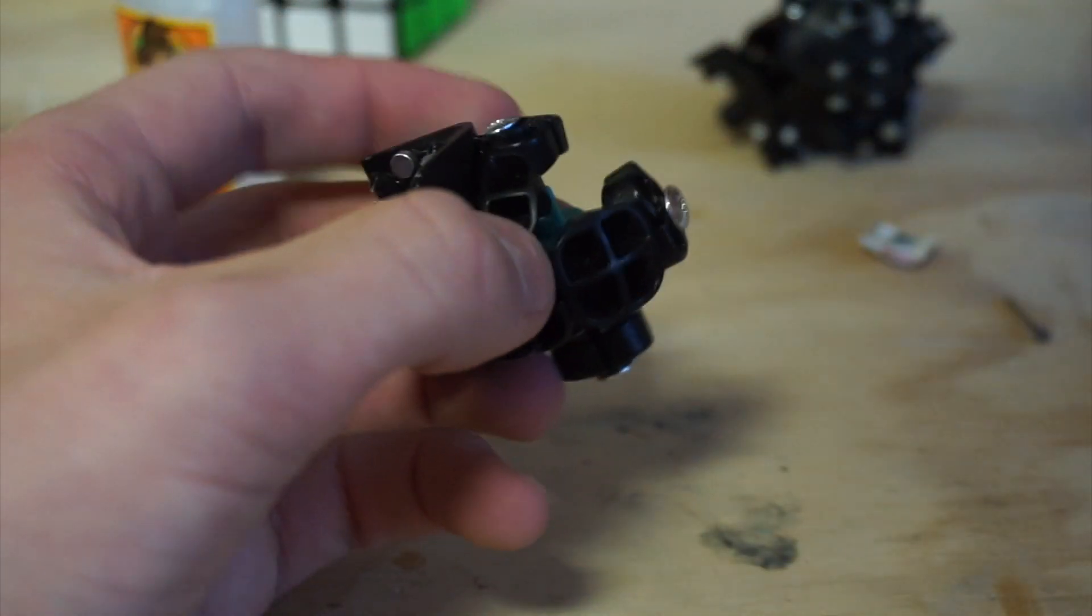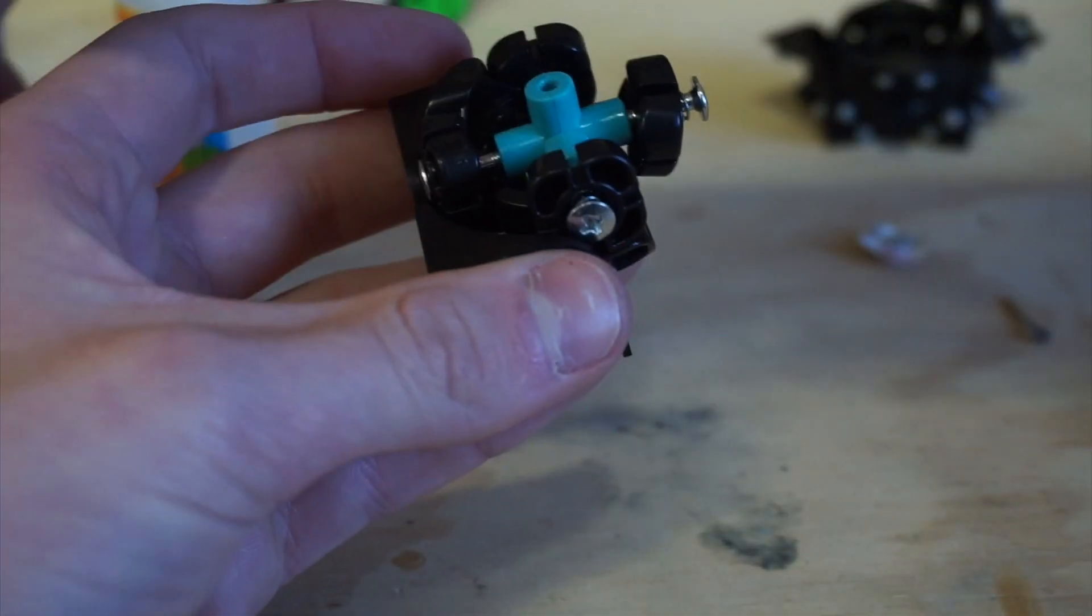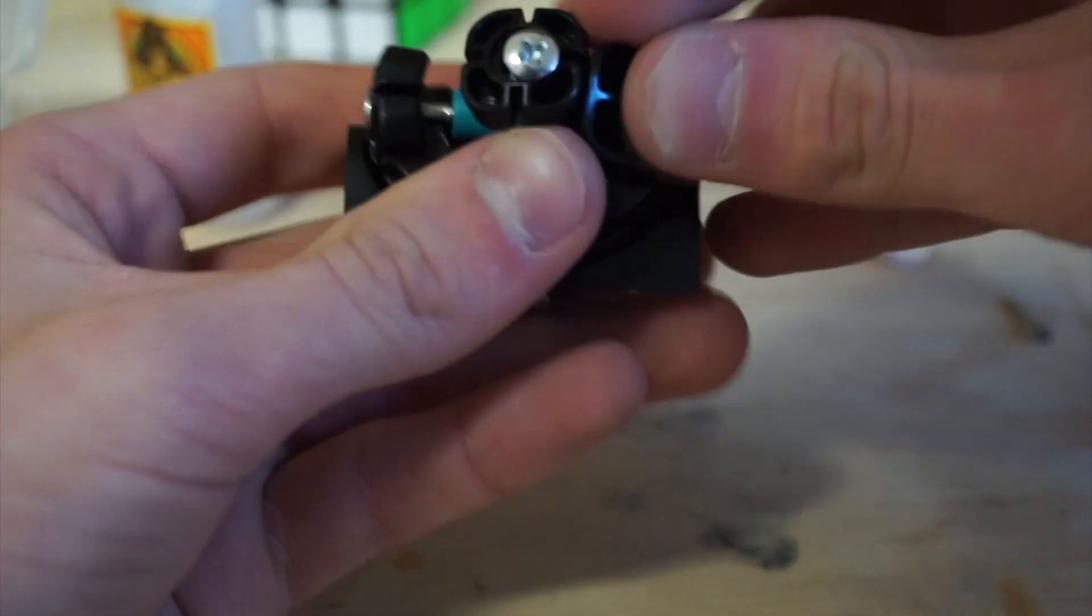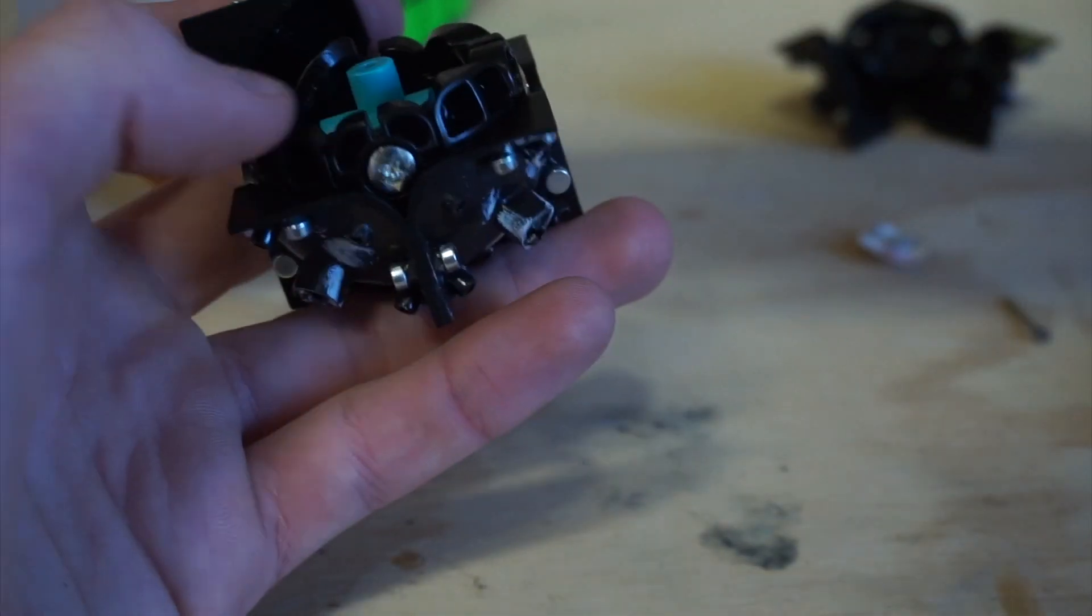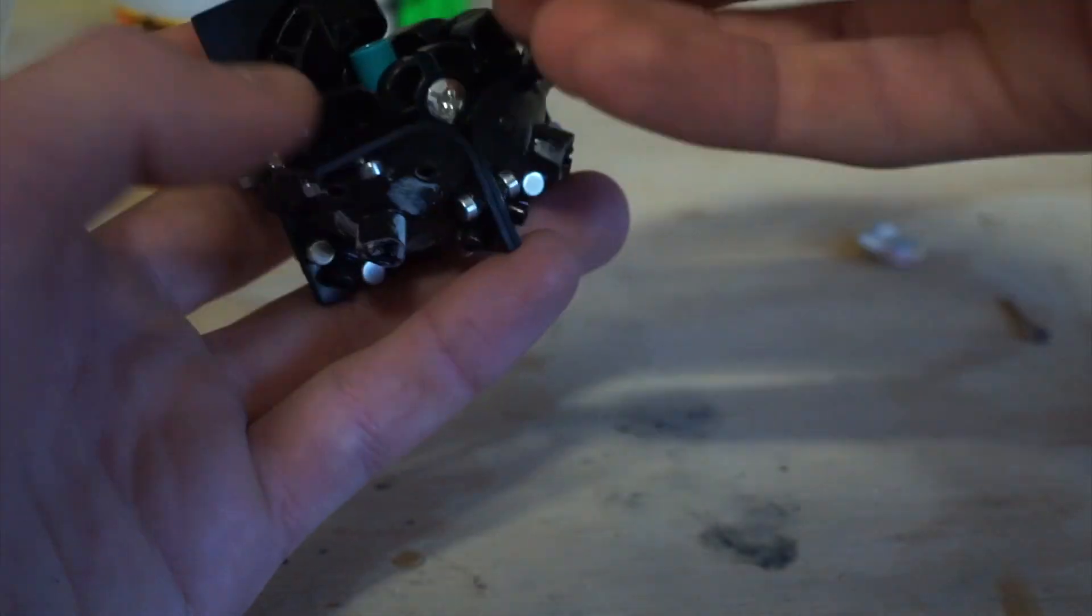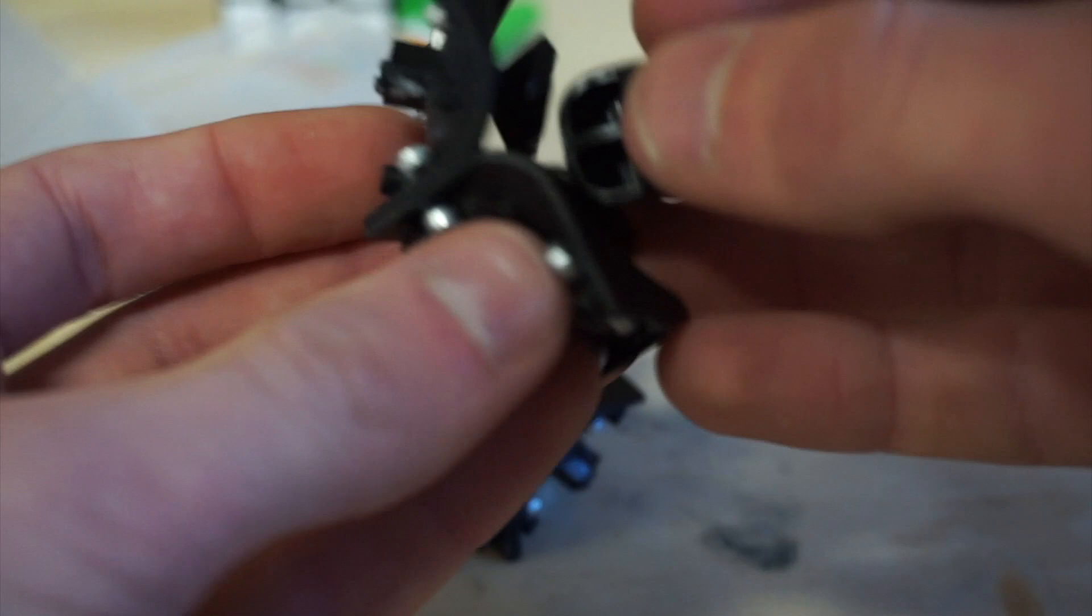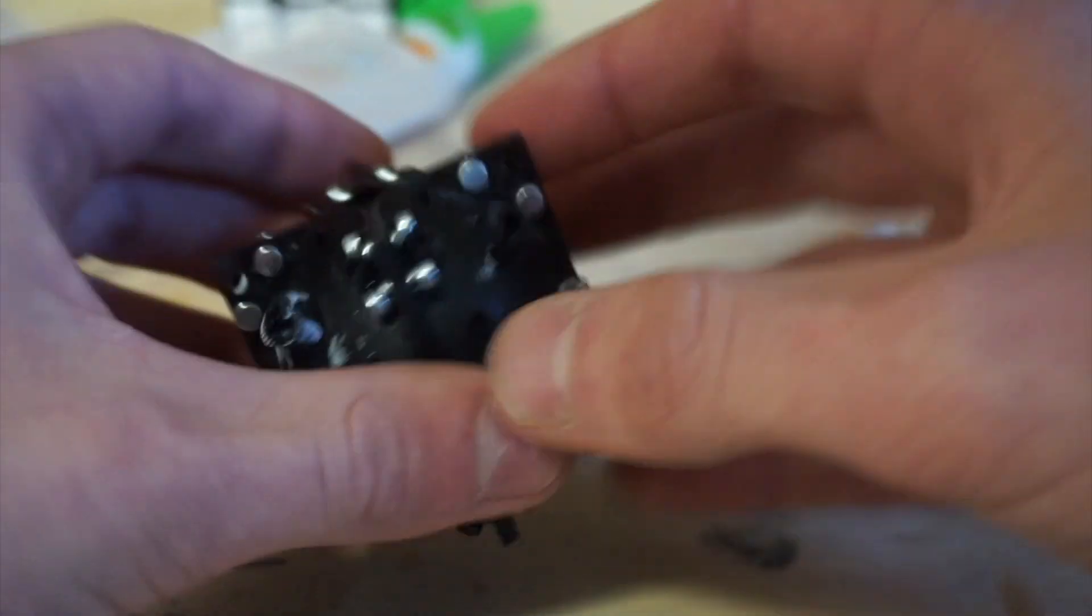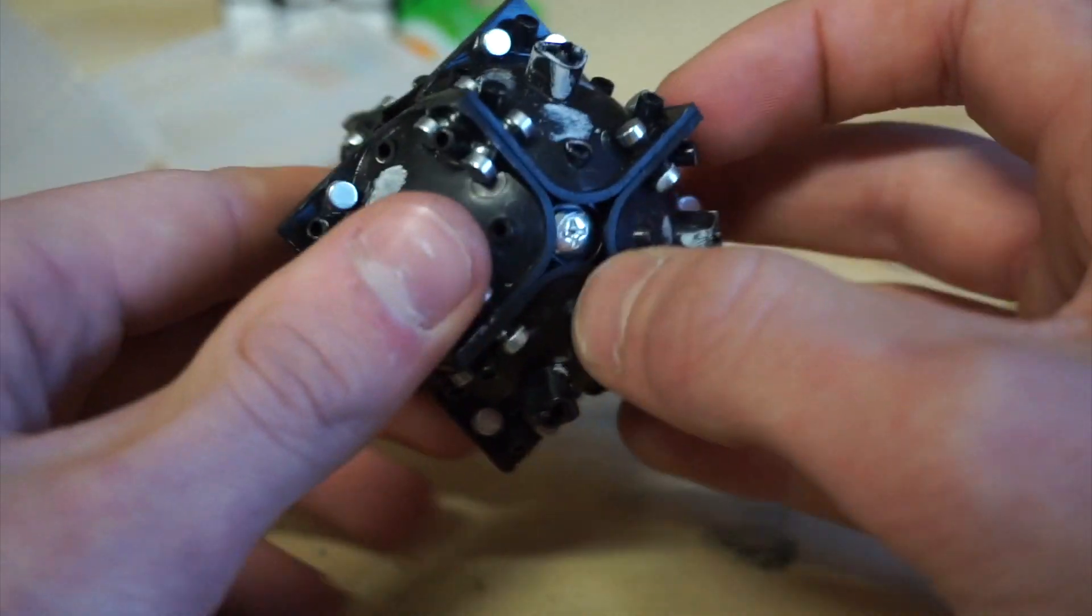After I glued all the magnets onto all the pieces, I took the corners and put them back together and reassembled the cube. It's kind of interesting here when you're putting the cube together because you can feel that the magnets are a lot stronger than they were before. Before they could barely hold the cube together, but now the cube holds just fine without the last screw holding the piece.